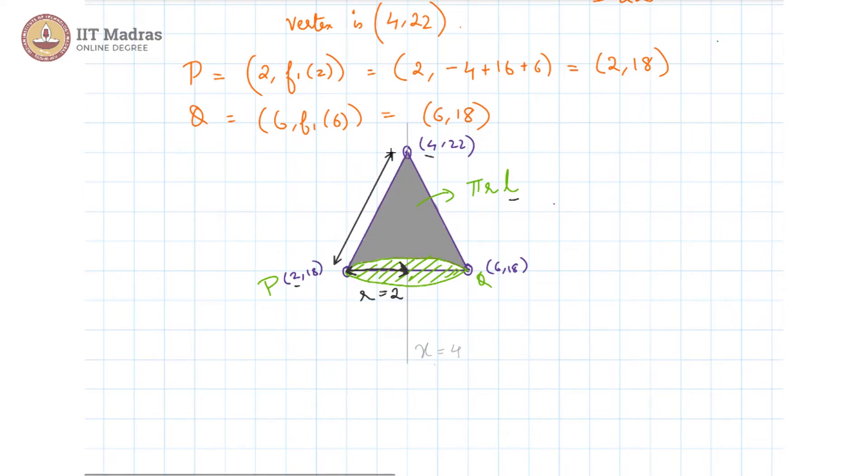That is the slant height, which is basically this height. That height can be obtained as the hypotenuse of this base radius and the height here, which is, as we can see, 4 units.